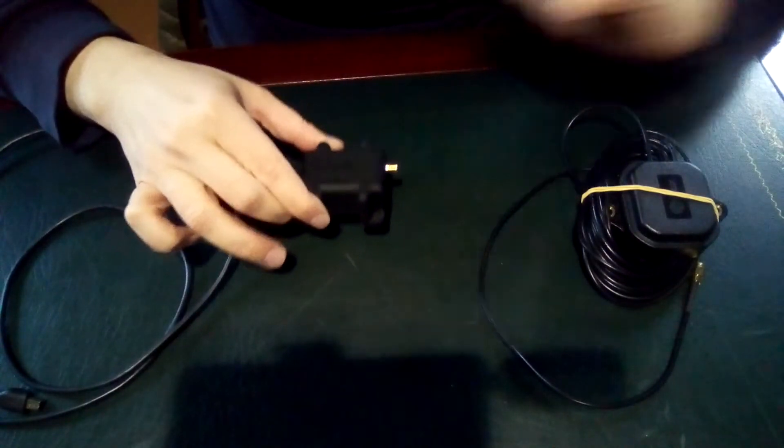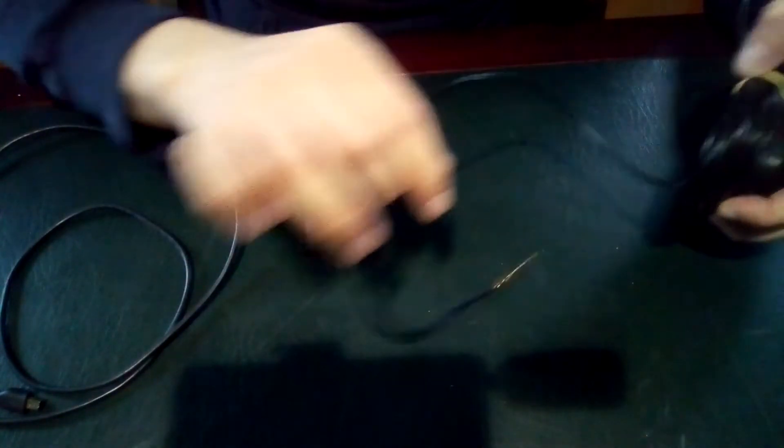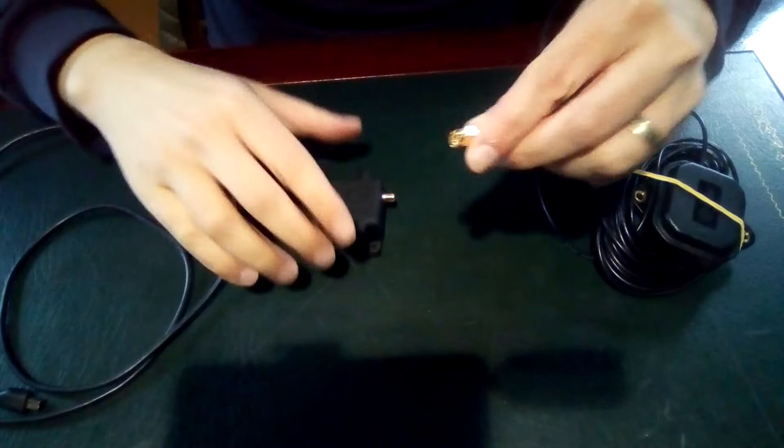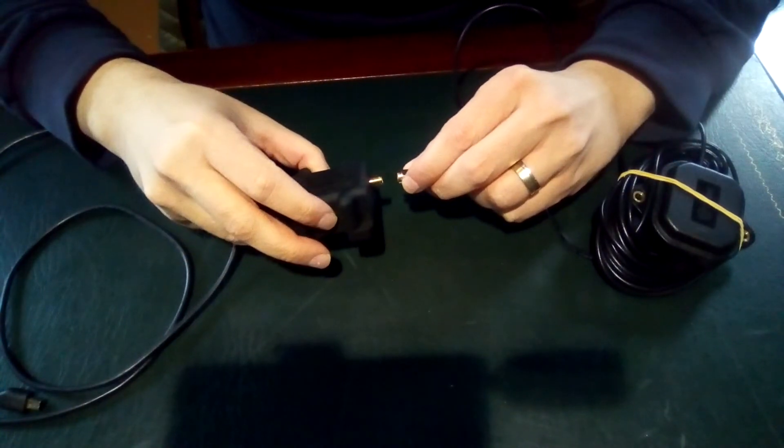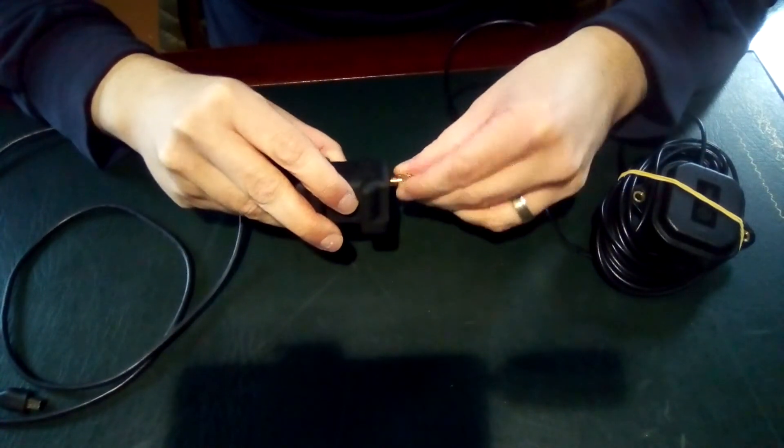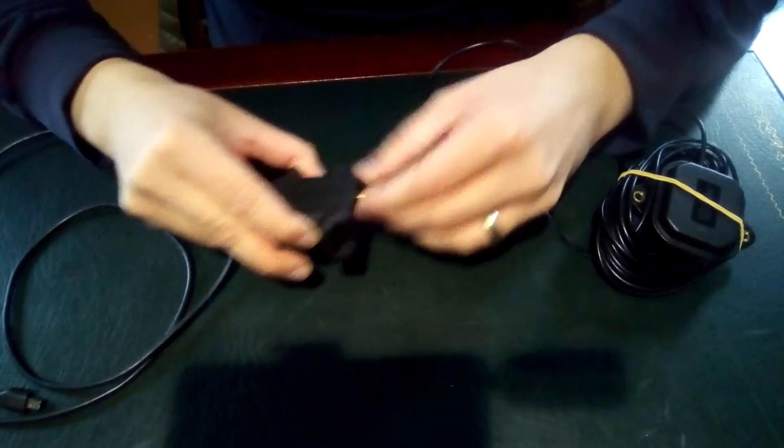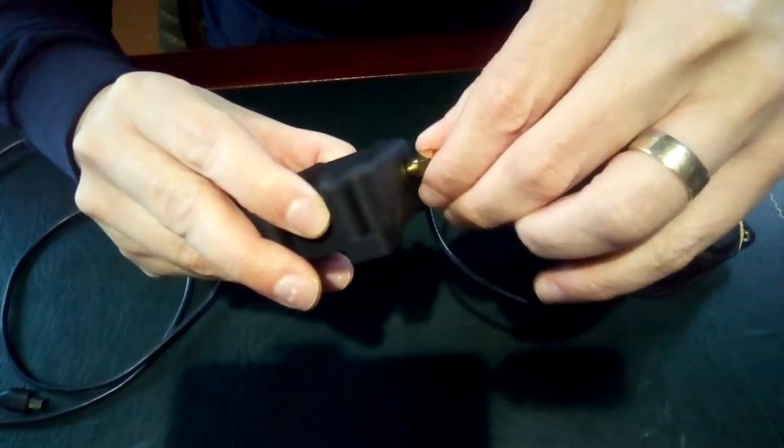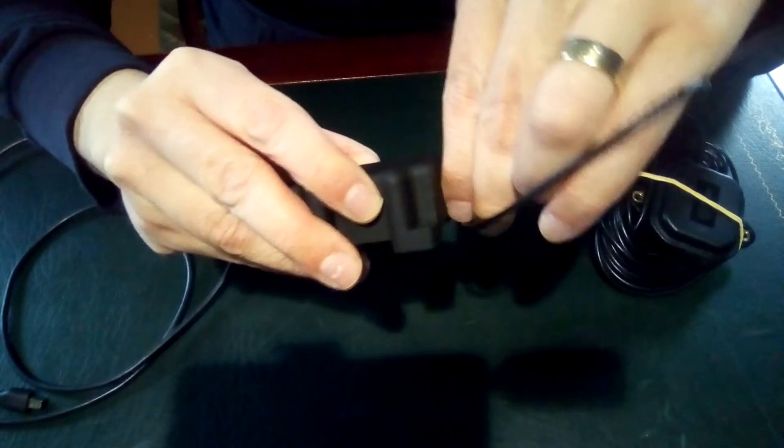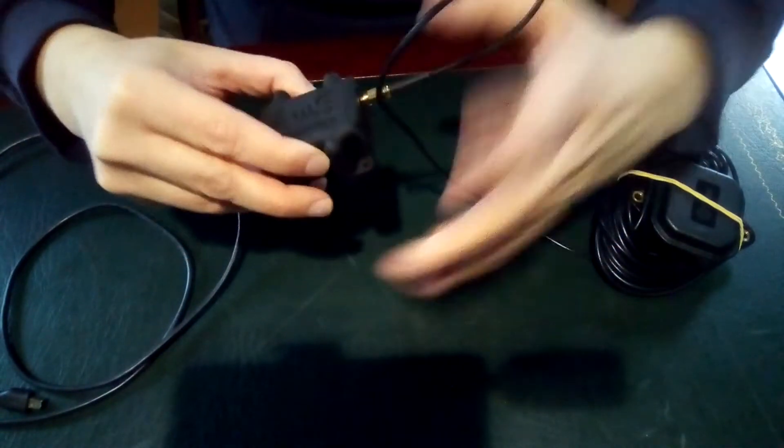This is a GNSS receiver and we have to connect it with the antenna. We take the SMA connector, turn it, and connect it to the GNSS receiver until it's secure.